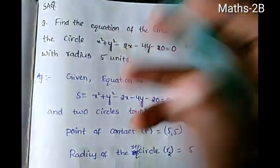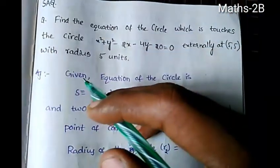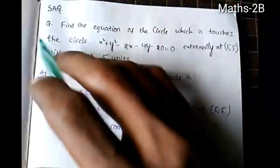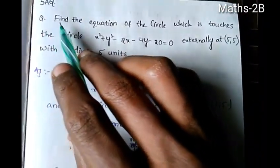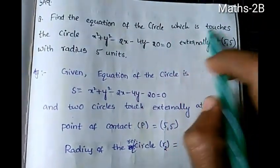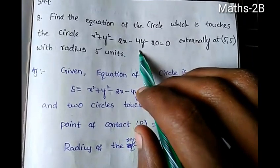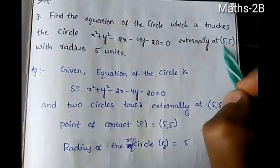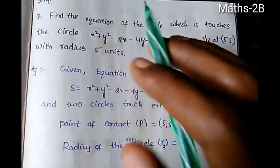Hi friends, hello and welcome. In this video, I will show you how to find the equation of the circle which touches the circle x² + y² - 2x - 4y - 20 = 0 externally at (5, 5) with radius 5 units.